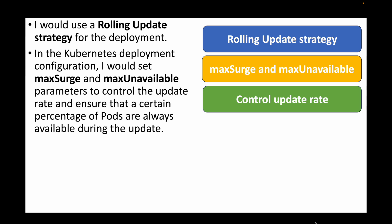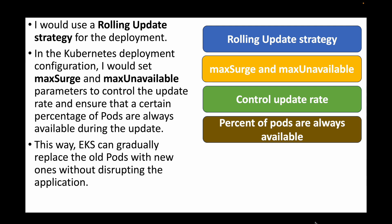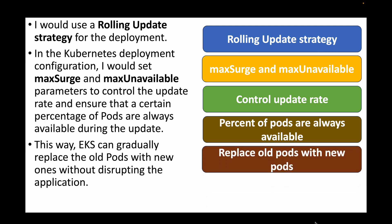By setting maxUnavailable, you define how many pods can be down at any time, ensuring a minimum number of pods are always running during updates. EKS will gradually replace old pods with new ones without disrupting the application. Because these parameters are set, Kubernetes ensures the minimum number of pods remain running while the deployment is updated to the newer version.